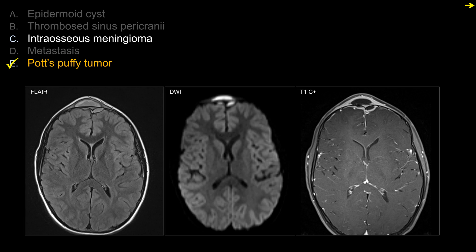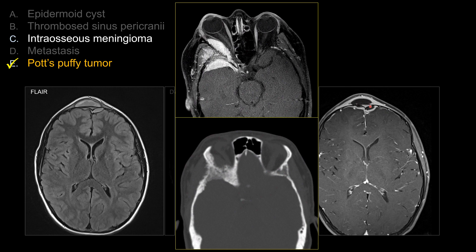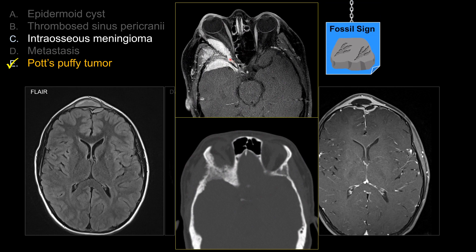For choice C, intraosseous meningioma: intraosseous meningioma should be solidly enhancing, like any meningioma. While cystic change can occasionally occur, it is very unusual to have a meningioma without any central enhancing component. This example shows a meningioma engulfing the greater wing of sphenoid and the lateral orbital wall with relative preservation of the surrounding bony structure — described as a fossil sign, as if a preserved fossil exists within surrounding bone. On CT, meningiomas also tend to elicit hyperostosis with expansion of adjacent bone. This does not look like a meningioma.